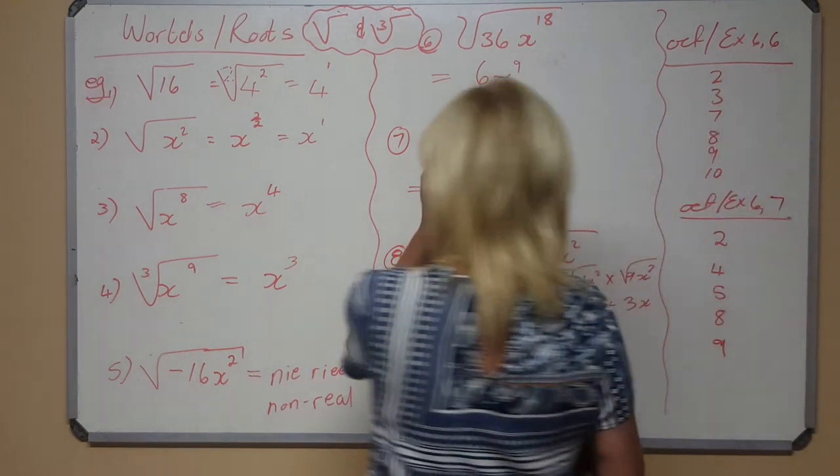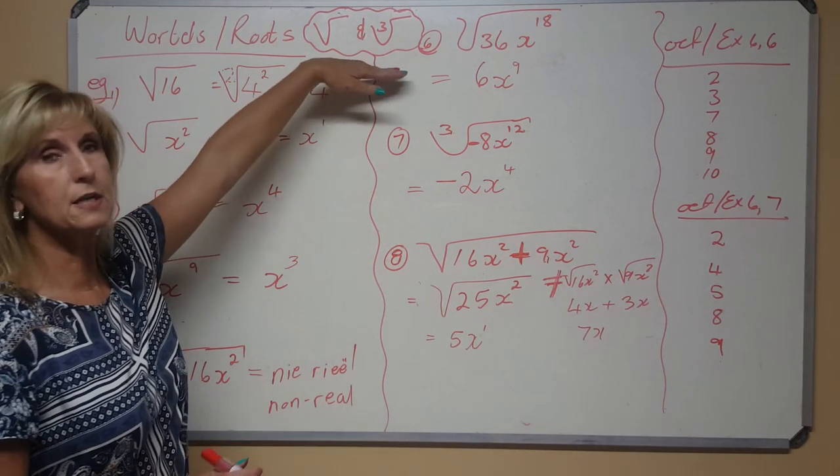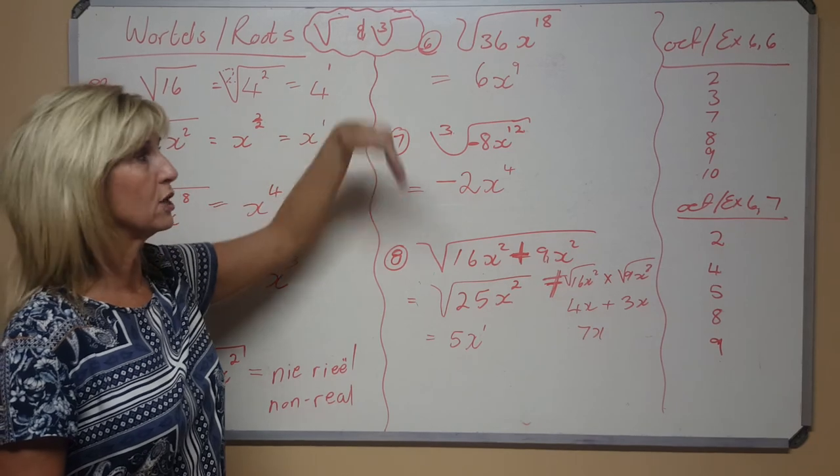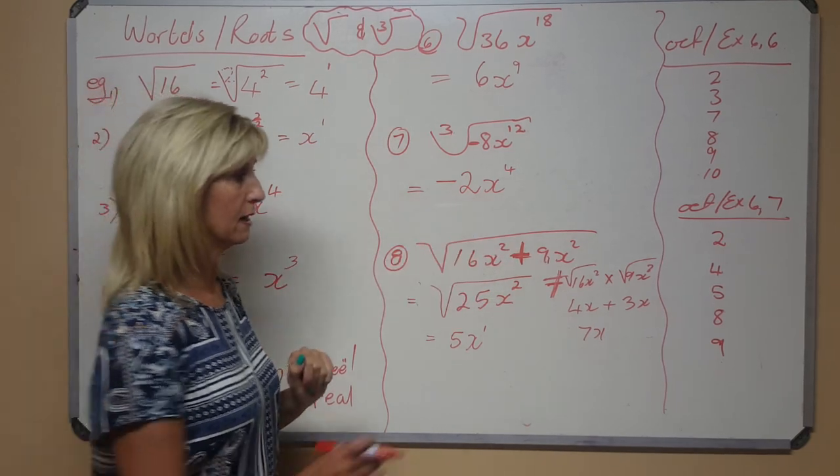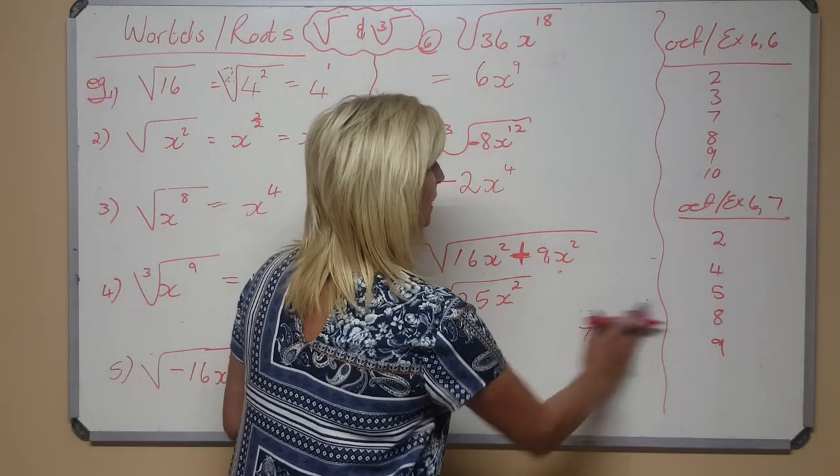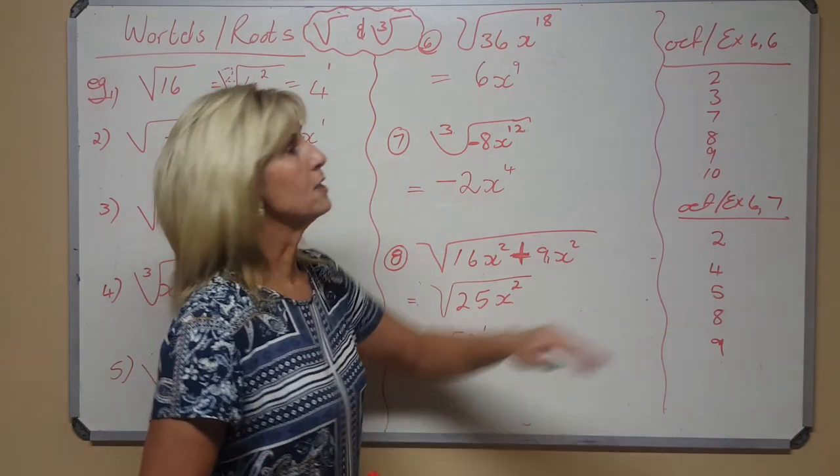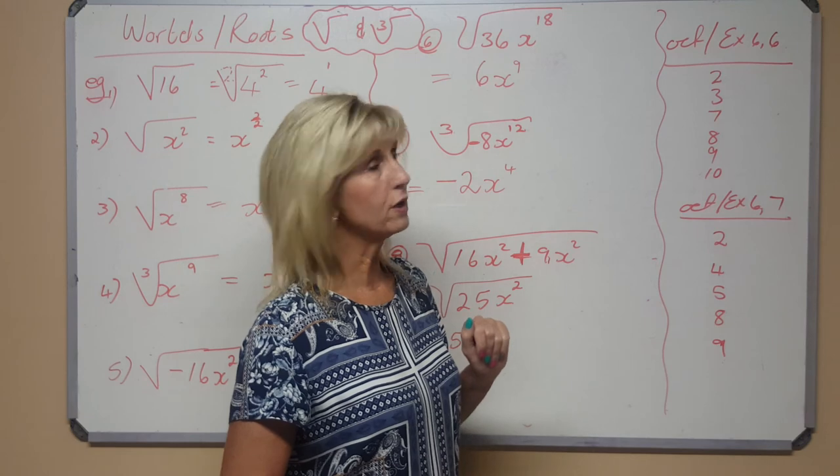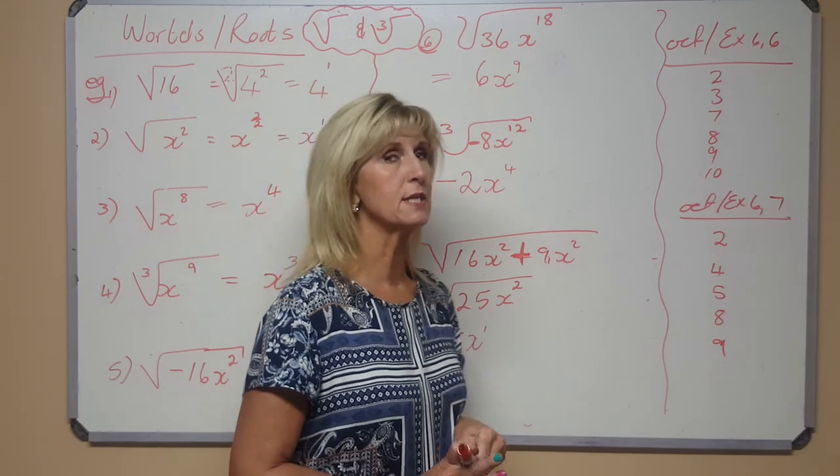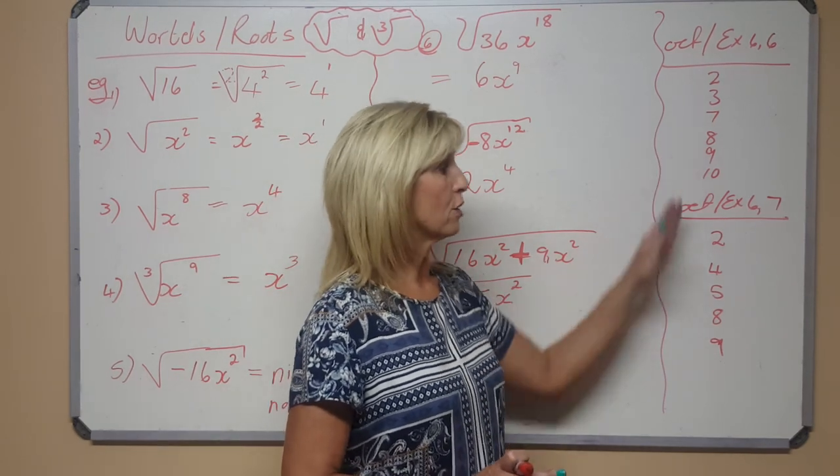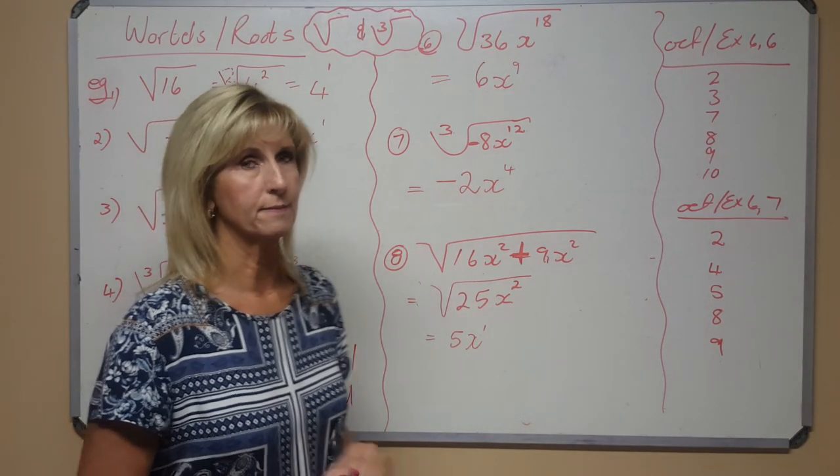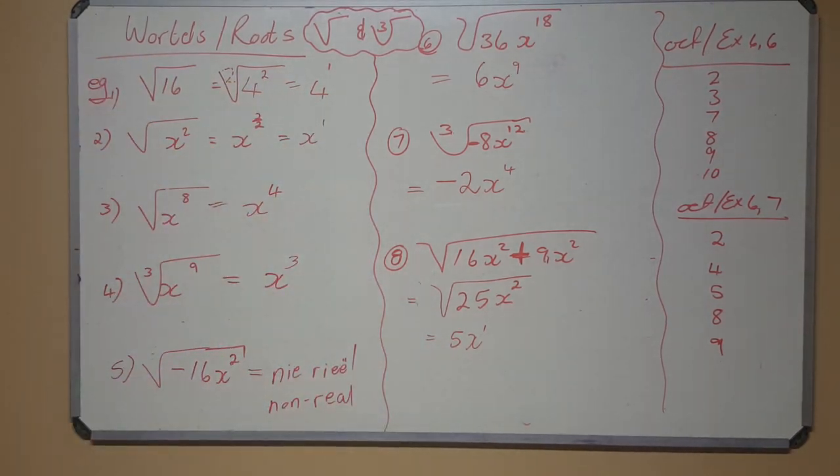So what you do with the roots, the square roots, the cube roots, the fourth roots, what you do in the whole numbers, you now apply to the variables. So your homework is exercise 6.6 and 6.7, the numbers that I gave you. They're shorter sums, so please try your best. Thank you.